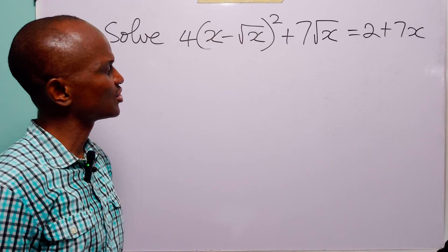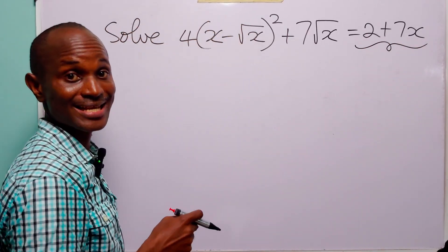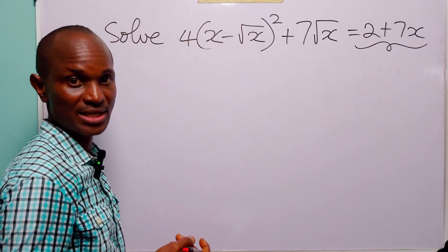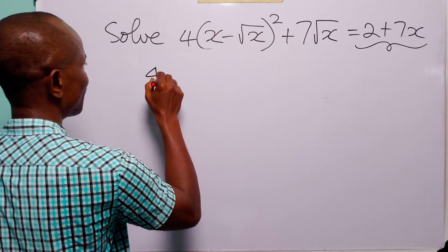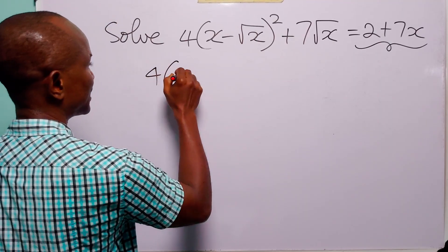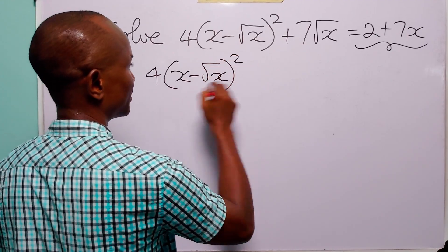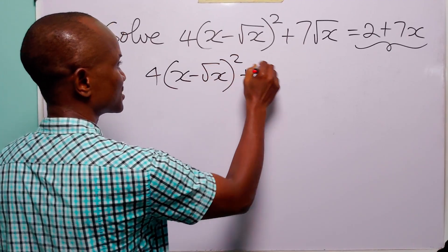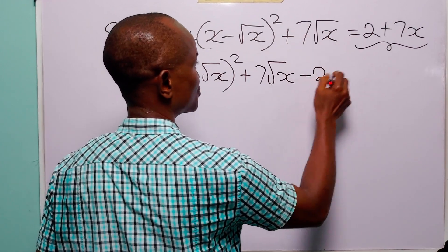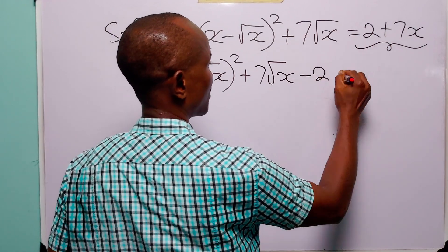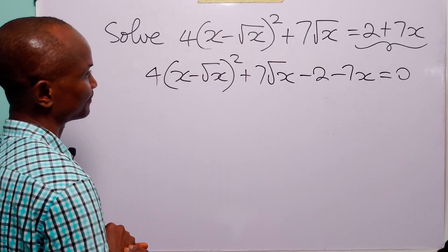To solve this equation, let us start by bringing these two terms on the right-hand side over to the left-hand side. When we do that, this equation becomes 4 times x minus root x, squared plus 7 root x minus 2, minus 7x, is equal to 0.